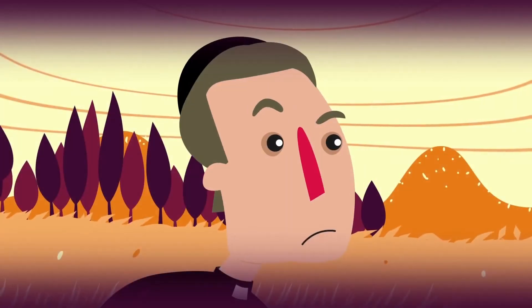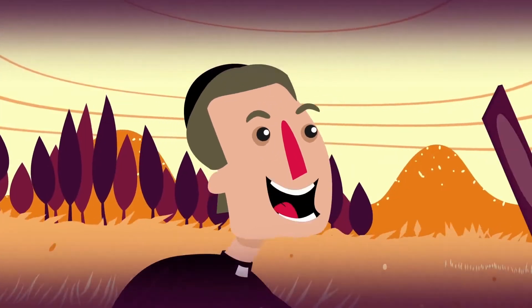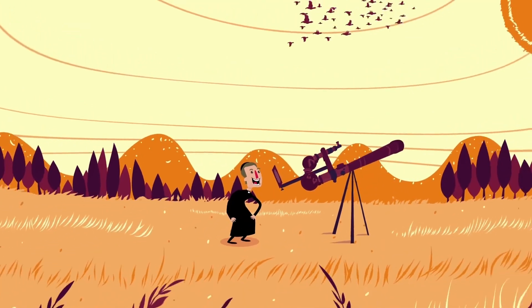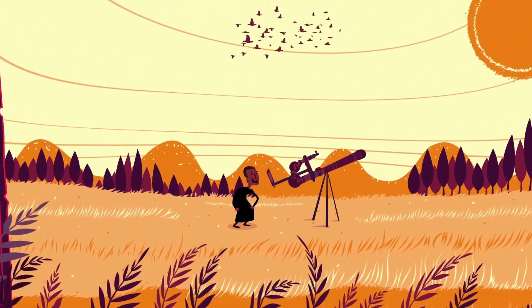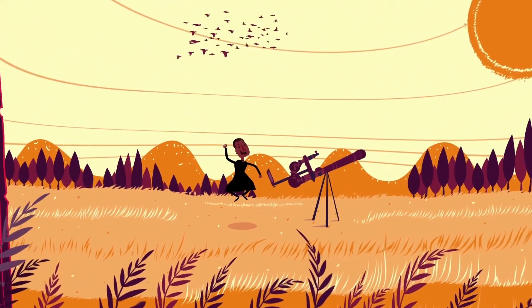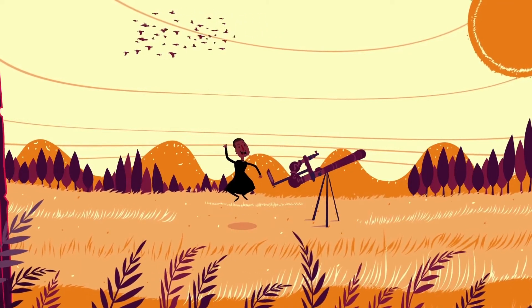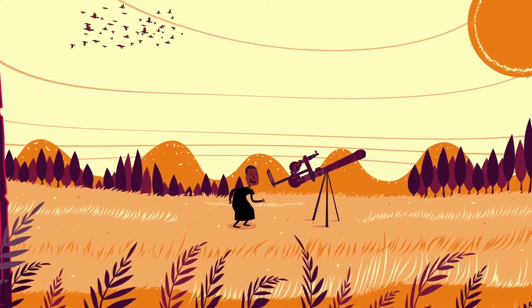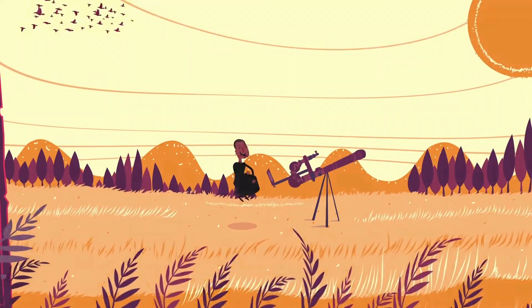El padre Secchi descubrió estas estructuras en 1877 y las llamó pratería ardente o pradera ardiente. Hoy las conocemos como espículas, que significa pequeñas espigas en latín.